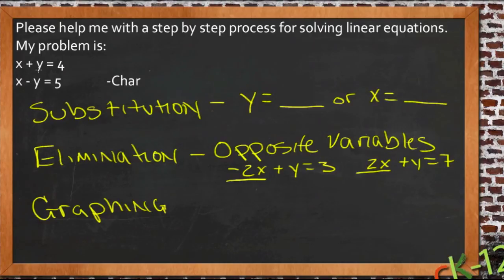Now in this equation set that you gave me, that is the case. We have a positive y and a negative y. So I'm going to guess that pretty early on here, elimination is probably going to be the easiest method for this particular set.